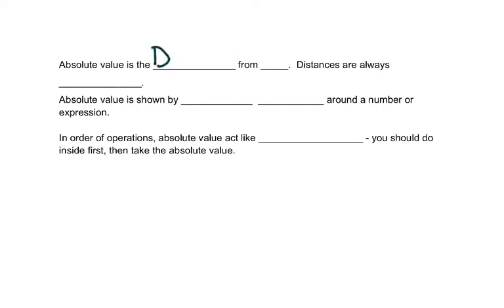Absolute value is the distance from zero. Distances are always positive. You don't use a tape measure and get a negative number when you measure a distance.